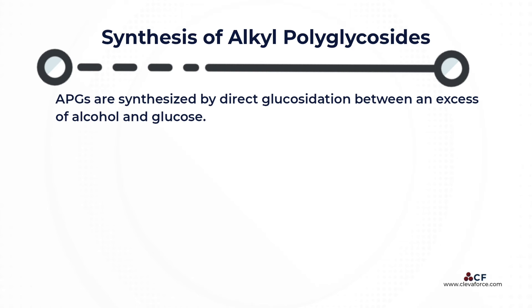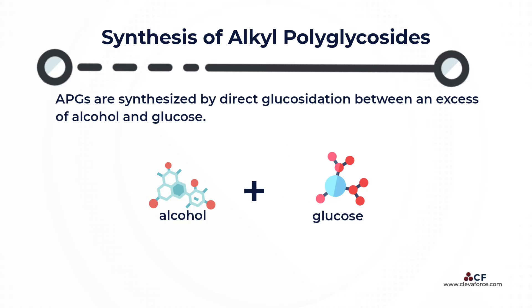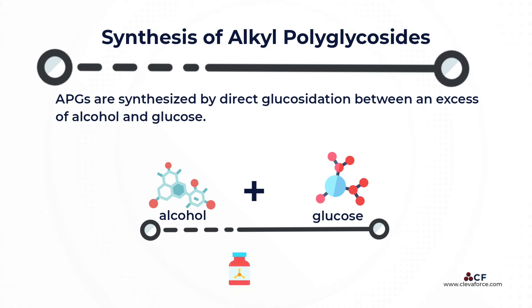Alkyl polyglucosides are synthesized by direct glucosidation between an excess of alcohol and glucose in the presence of an acid catalyst at elevated temperature.